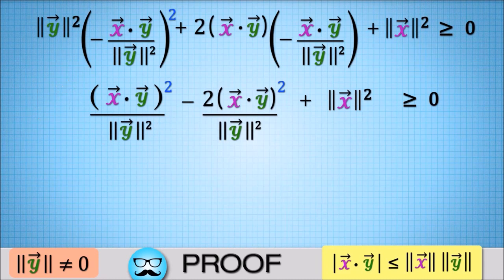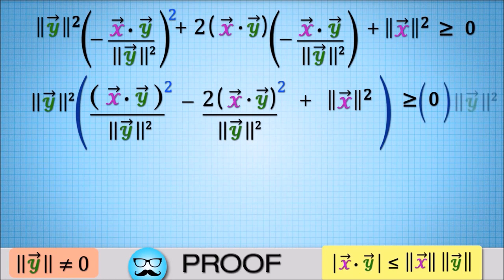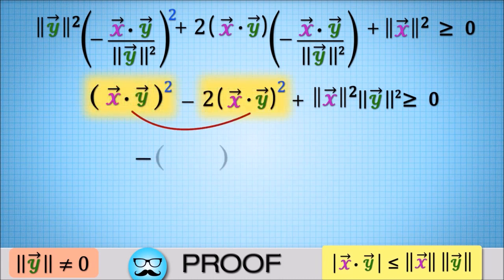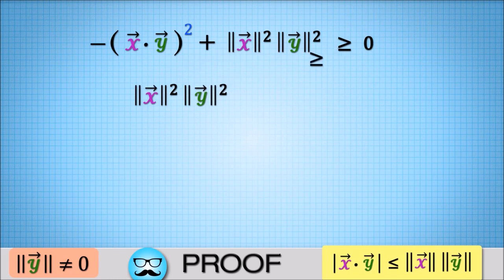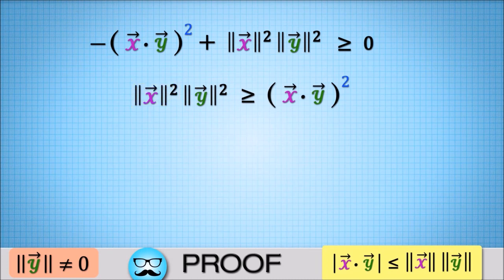Then our inequality becomes x dot y squared over norm of y squared minus 2x dot y squared over norm of y squared plus norm of x squared times norm of y squared is greater than or equal to zero. Multiplying both sides by norm of y squared and moving terms to the other side, we get the norm of y squared norm of x squared is greater than or equal to x dot y squared.